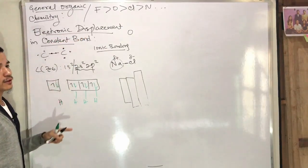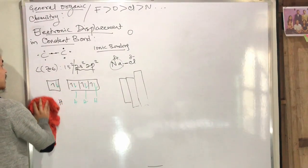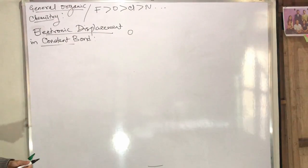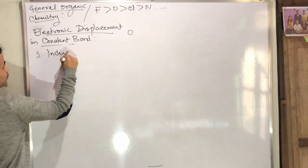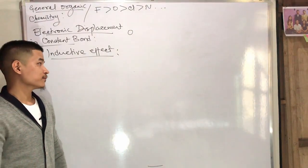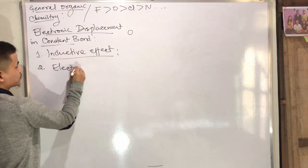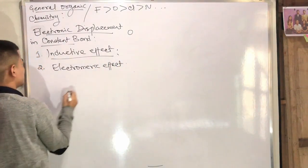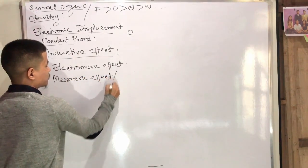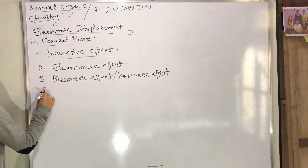Electronic displacement in covalent bonds: the inductive effect, the electromeric effect, the mesomeric effect or resonance effect, and hyperconjugation.